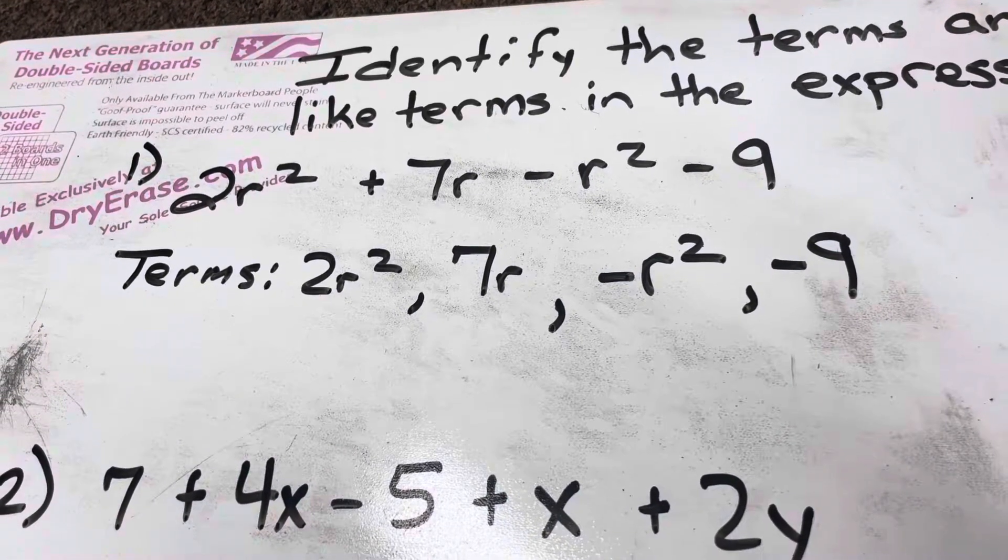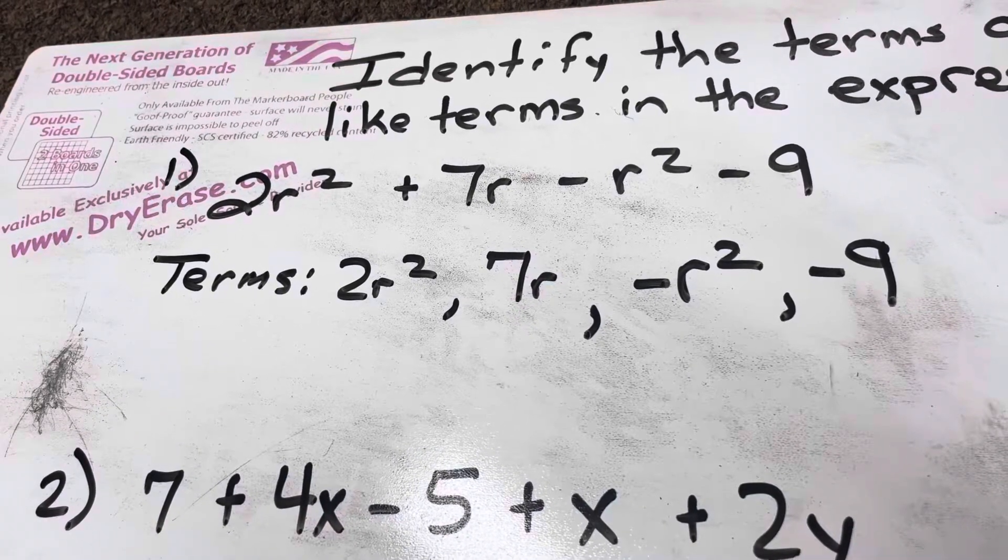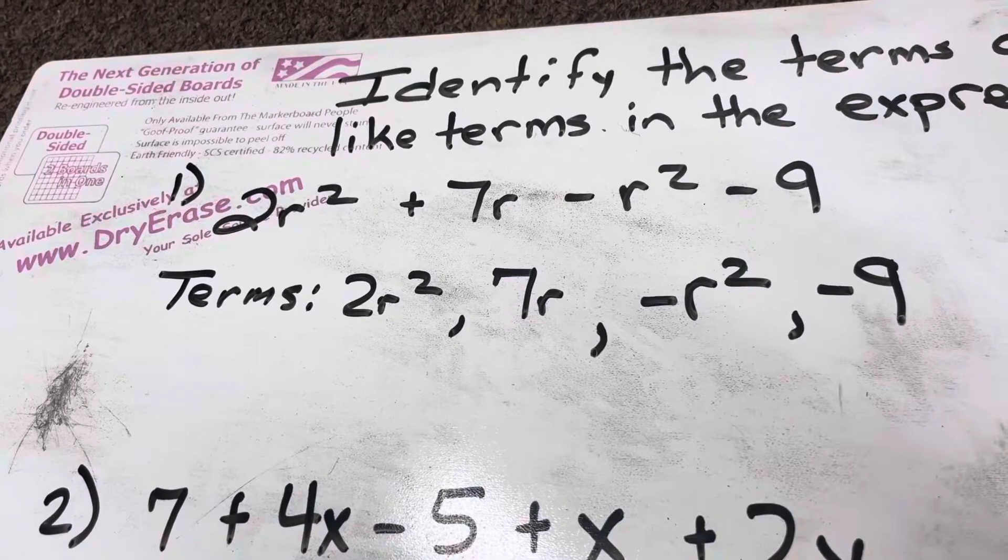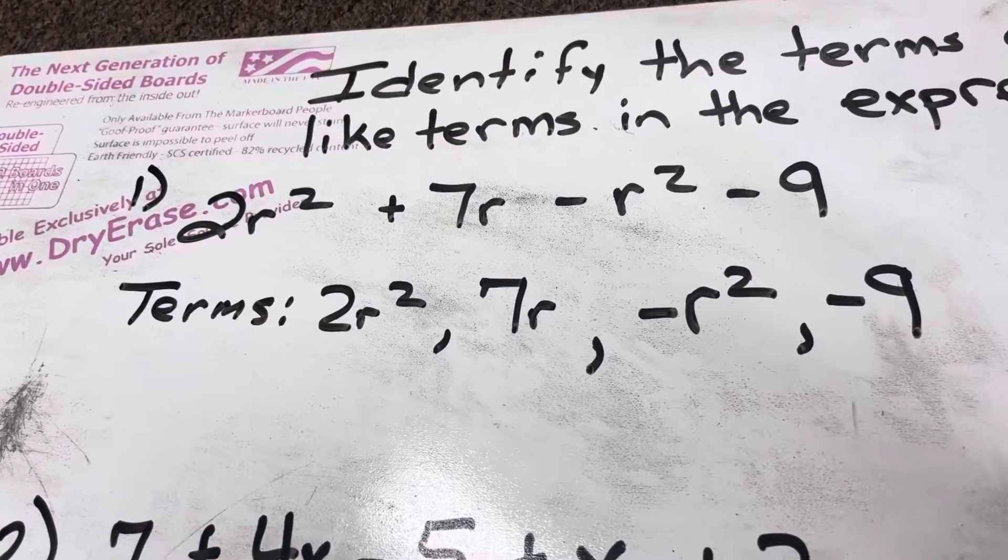Okay, so that's the terms. Now, like terms. Like terms are numbers that have the same variable and the same exponent. Same variable, same exponent.